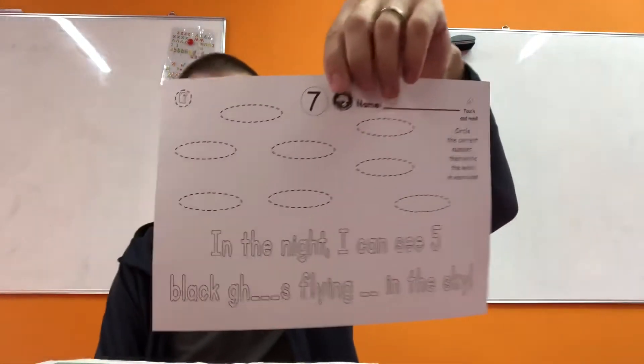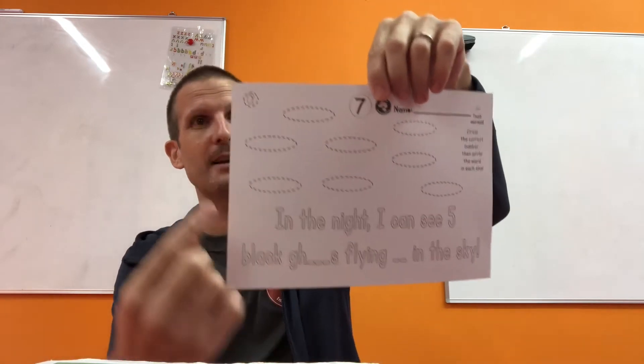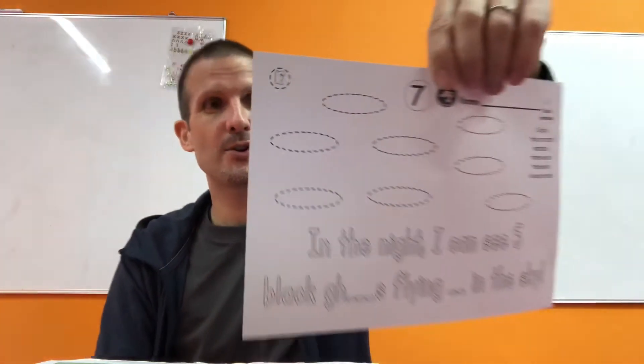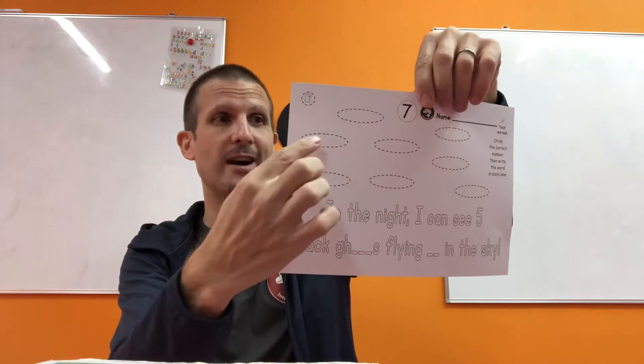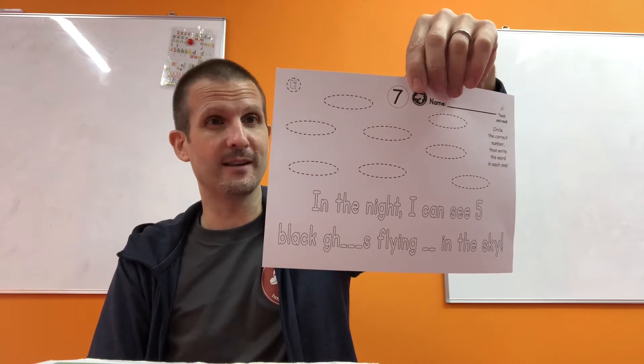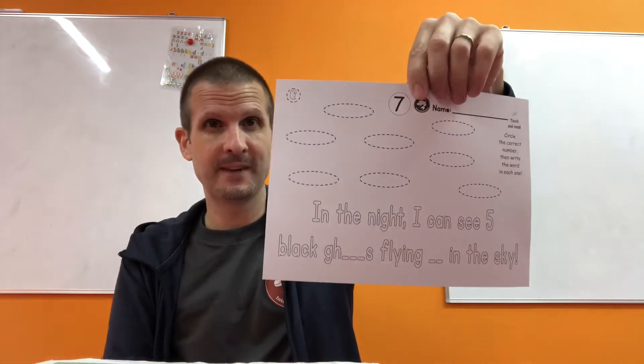Number seven. It says: in the night, I can see five black ghosts flying up in the sky. But look — one ghost is already circled here. So you just have to circle how many more? And this time, I want you to write the word ghost inside each of the ovals you circle. Remember, you only need five and one is already circled — so how many more do you need? Write the word ghost: G-H-O-S-T. Do you know the word of the week? Make sure to tell us when you come to school. It's not G-H-O-S-T — no, that's not the word of the week.